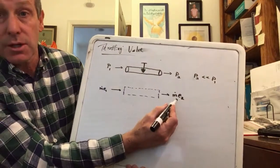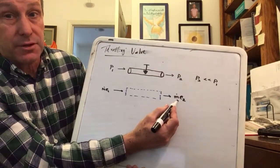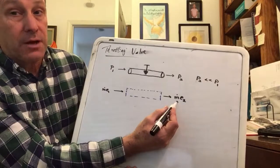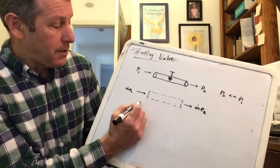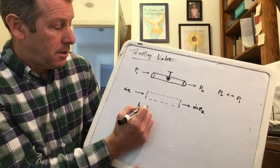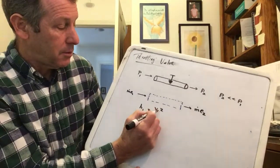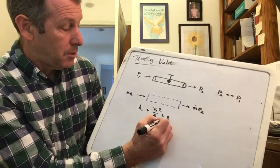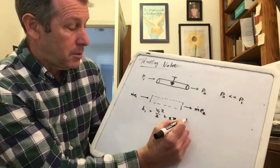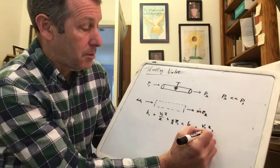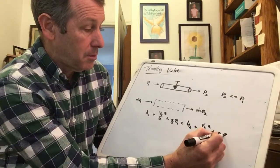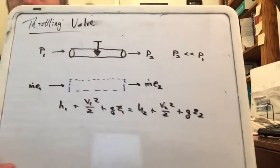How is that going to actually simplify? I'll write it all out quickly for you. You can see that m·e1 and m·e2 are equal, so the m dots are going to cancel. So really, if we had a throttling valve equation, it would be e1 equals e2.